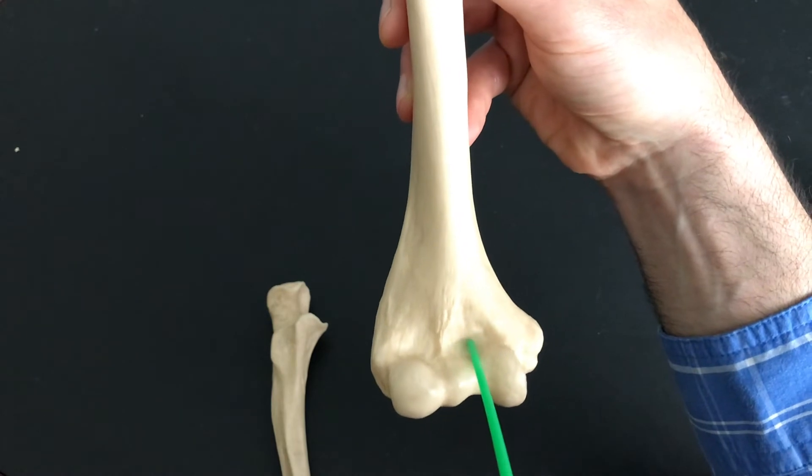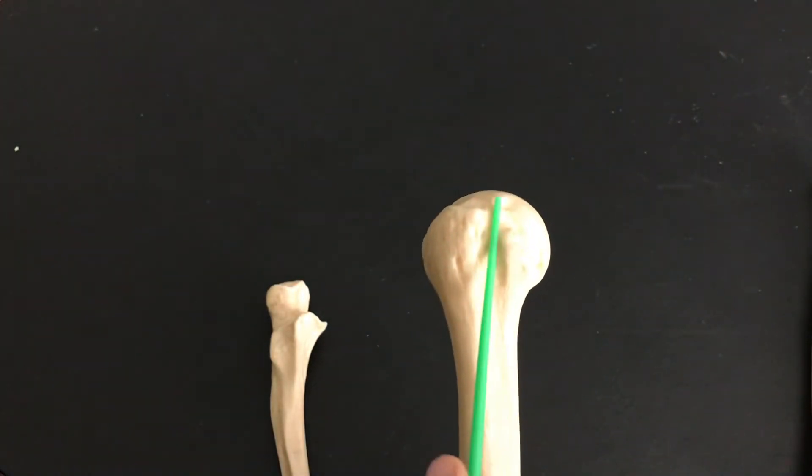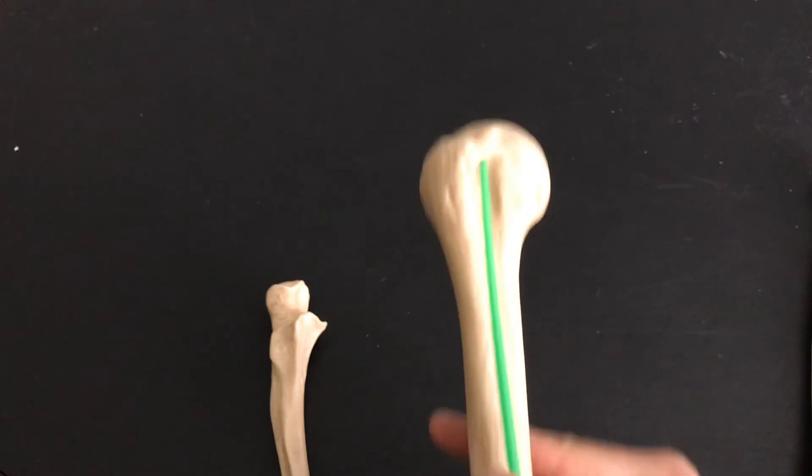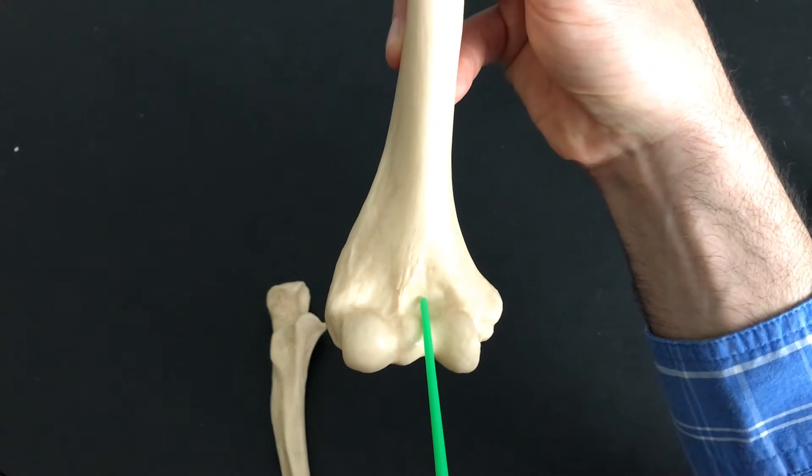I also mentioned that this region right here, remember we're on the anterior side of the humerus, this region right here is called the coronoid fossa.